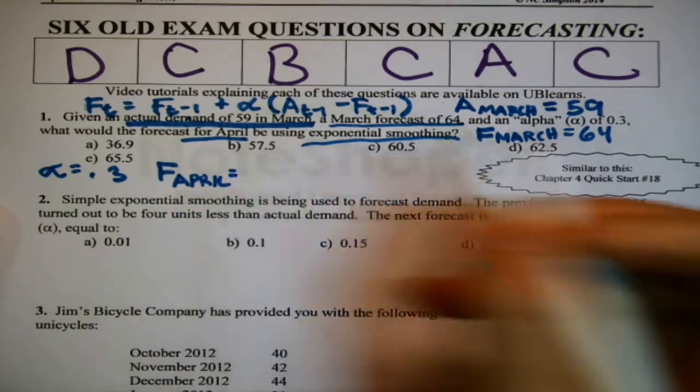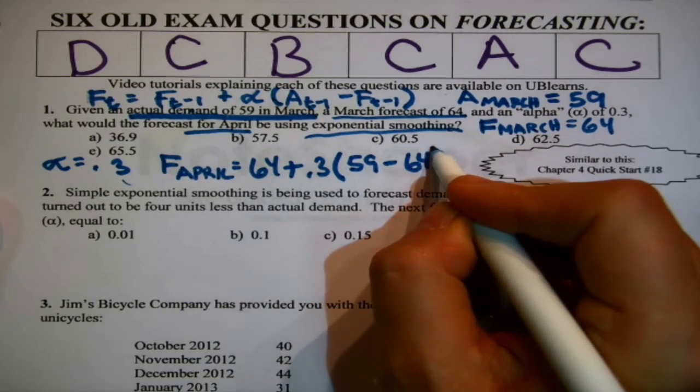All I've got to do is piece it together. The forecast for April is the forecast for March, okay that was 64, plus alpha, okay that was 0.3, just piecing it together, staying organized. The actual for March was 59 minus the forecast for March, 64. Then I just do the computations. That's where I get D, 62.5.